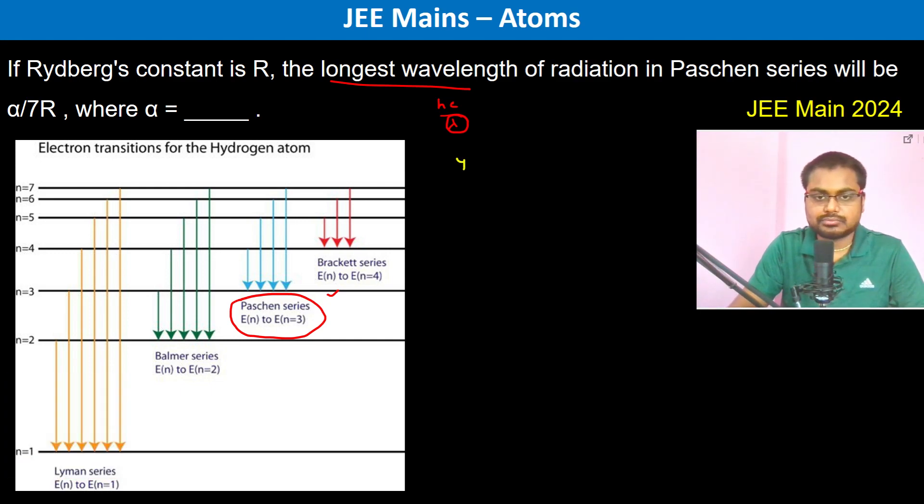The least energy will be in transition from 4 to 3. So now we can write hc by lambda is equal to